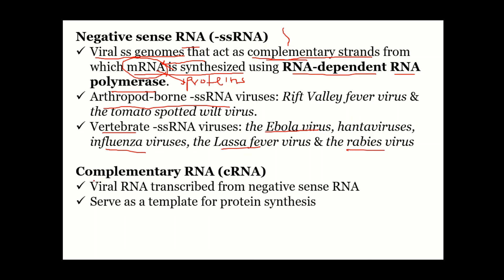From negative sense RNA we also get something called complementary RNA, which is the viral RNA transcribed from the negative sense strand. Whatever RNA we get from negative sense is called complementary RNA, and it serves as a template for protein synthesis.